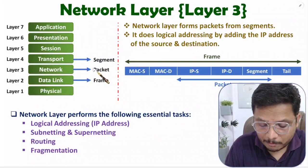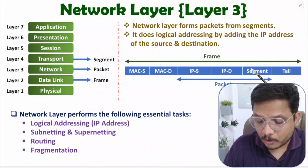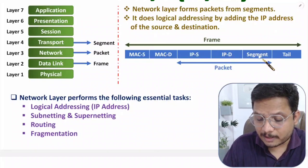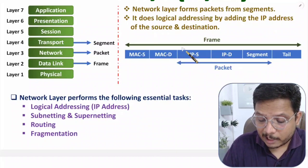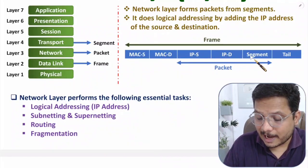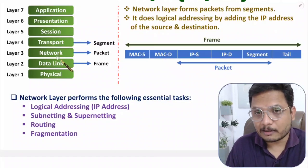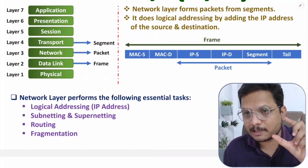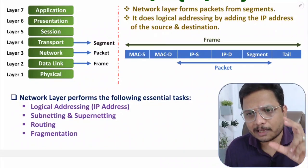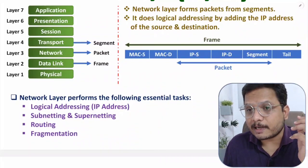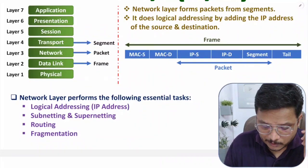Network layer forms packets from segments. If you observe the frame structure, you'll see that if you add the IP address of source and destination with segments, you get packets. So IP address of source and destination is added with segments to form packets at the network layer. Those packets are then given to the data link layer, which forms frames.